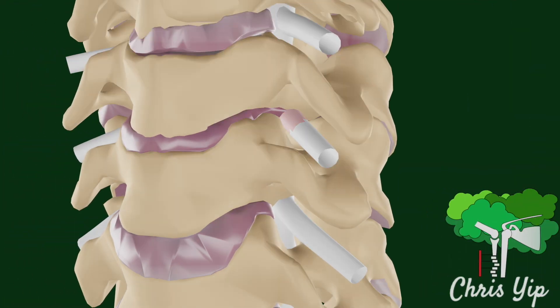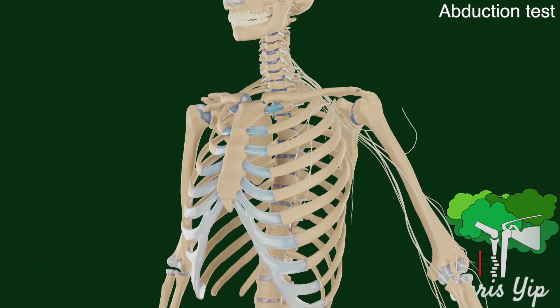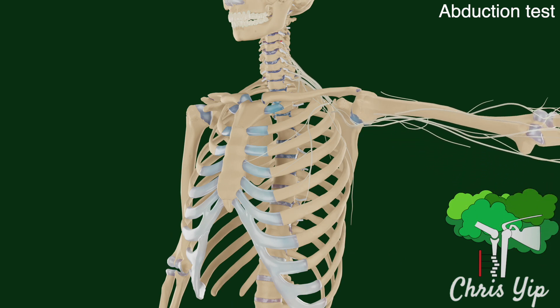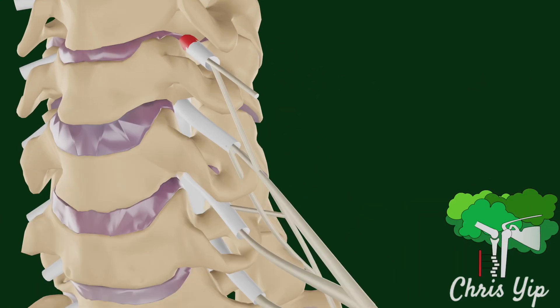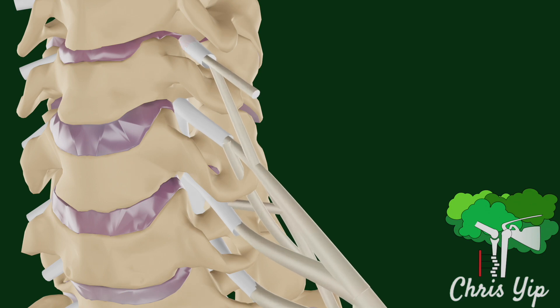Another useful test is the abduction test. The patient is asked to abduct the shoulder on the side of the lesion, which reduces the tension on the brachial plexus and its nerve roots, resulting in symptomatic relief.